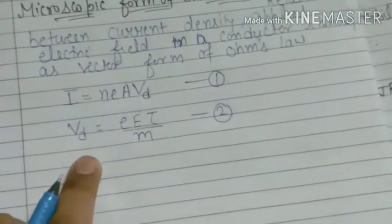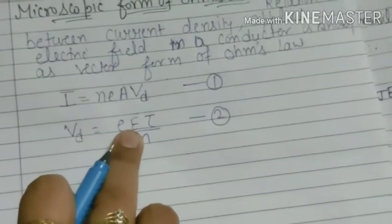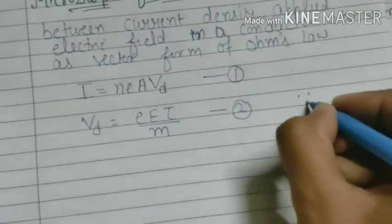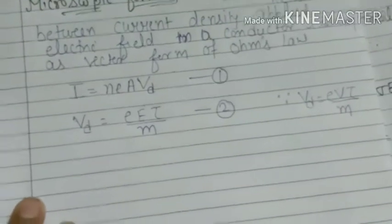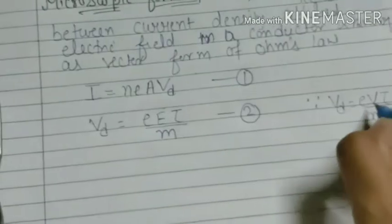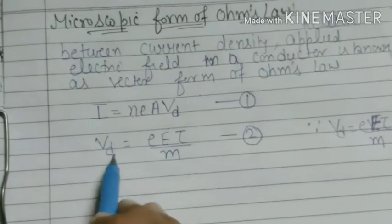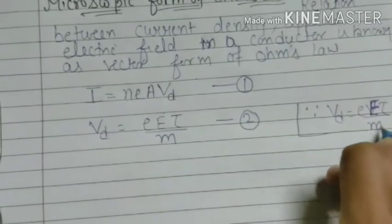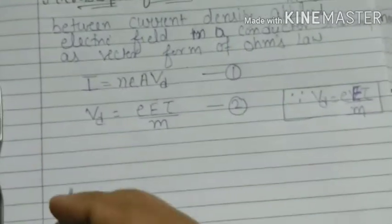अब जो हमारी second equation है उसमें electric field E को change करेंगे। V_D = eEτ/m — इस value को हम first equation में put करेंगे। Now we put the second equation into the first equation। V_D की value put करने पर I = neA × (eEτ/m) बन जाएगा।